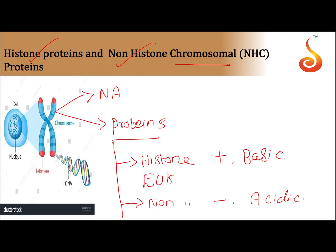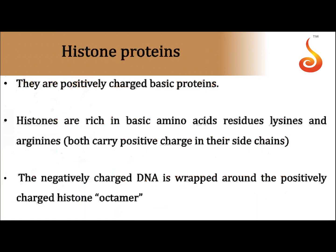Histone proteins are only present in eukaryotic organisms and absent in prokaryotic organisms. Eukaryotes are organisms with a very well developed nucleus. Histone proteins are positively charged basic proteins found exclusively in these organisms.